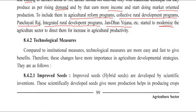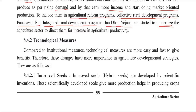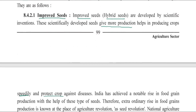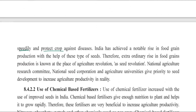Now let us see the technological measures to improve agricultural productivity. First is the use of improved seeds. Hybrid seeds or improved seeds are developed through scientific inventions. These seeds give more production, produce crops speedily, and protect crops against diseases. India has seen a large rise in food grains — about 4-5 times compared to the 1950s — because of these seeds. This extraordinary rise in food grain production is known as the seed revolution, alongside the green revolution.